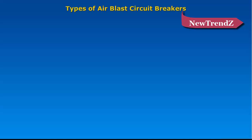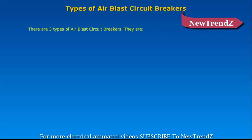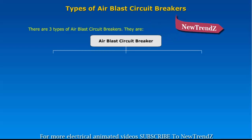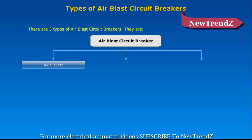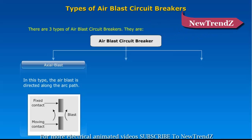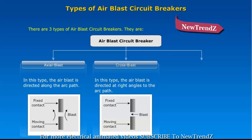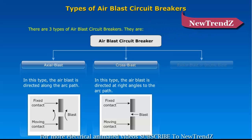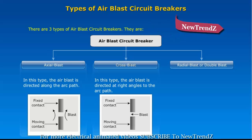There are three types of air blast circuit breakers: axial blast, in which the air blast is directed along the arc path; cross blast, in which the air blast is directed at right angles to the arc path; and radial blast, or double blast, in which the air blast is directed radially.